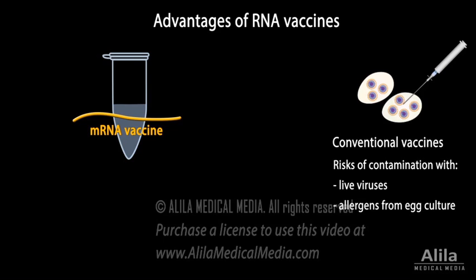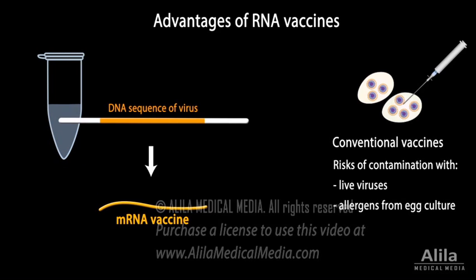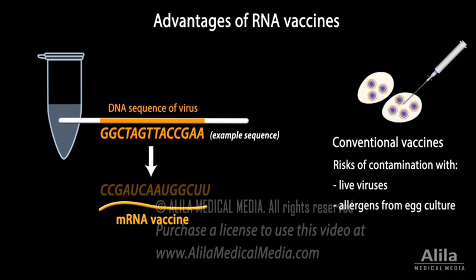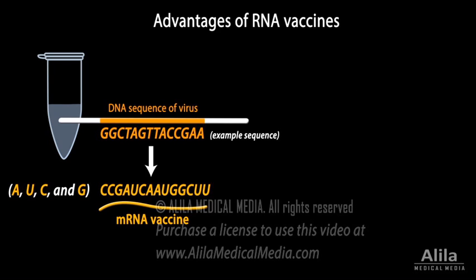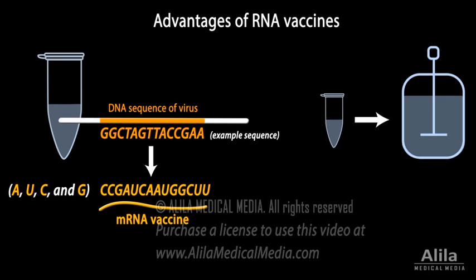Such risks do not exist with RNA vaccines, because mRNA molecules can be synthesized in a cell-free system using a DNA template that contains information for making the viral protein. The mRNA is made from the same building blocks as natural mRNA, so it has the same chemical composition. The relative simplicity of the production process makes it easier to standardize and scale, enabling rapid responses to emerging pandemics. In case the virus mutates, it is also simple to change the mRNA sequence to match the mutation.